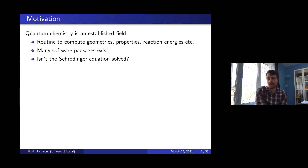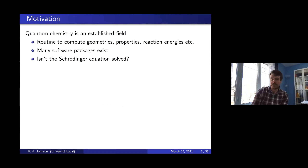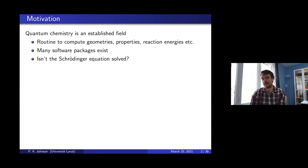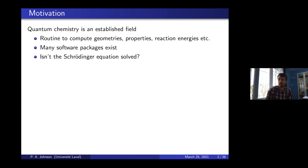Quantum chemistry — and I know not everyone in the audience is a chemist — is established. It's routine to compute properties, geometries, and reaction energies for a lot of things. Lots of software packages exist; you can pay for them or find ones that are not paywalled. You can use them fairly effectively to solve the Schrödinger equation, which is what you need to do for chemistry.